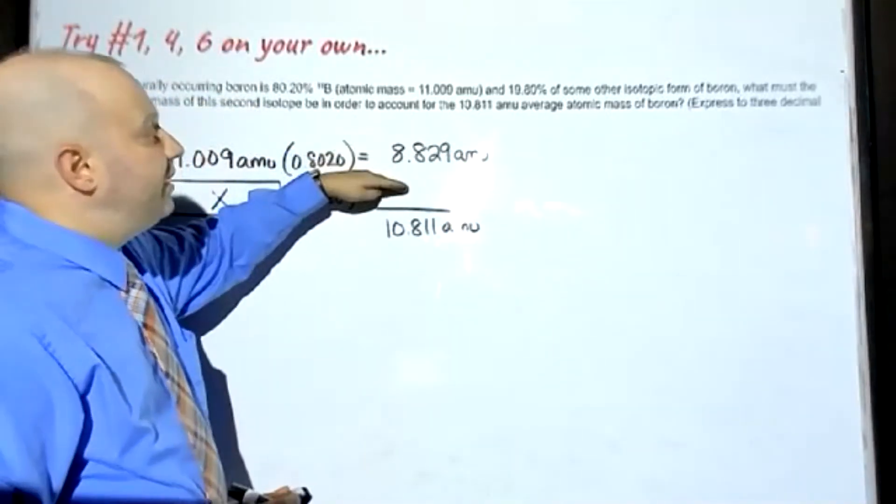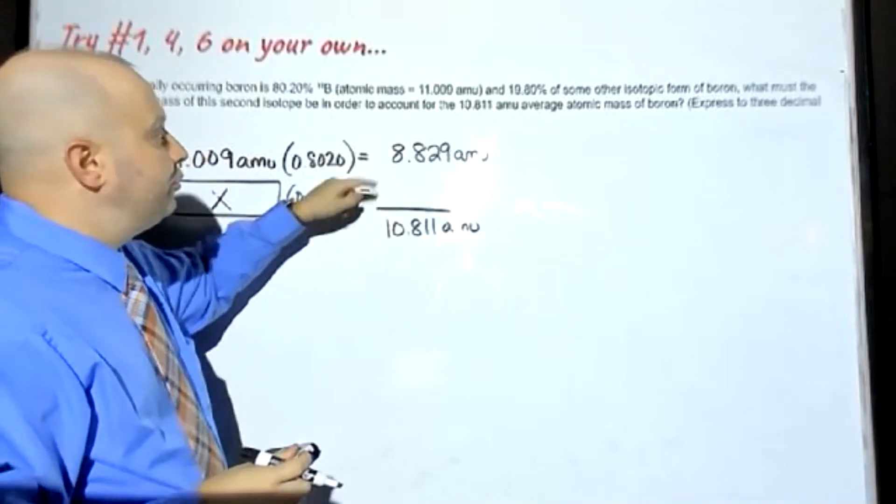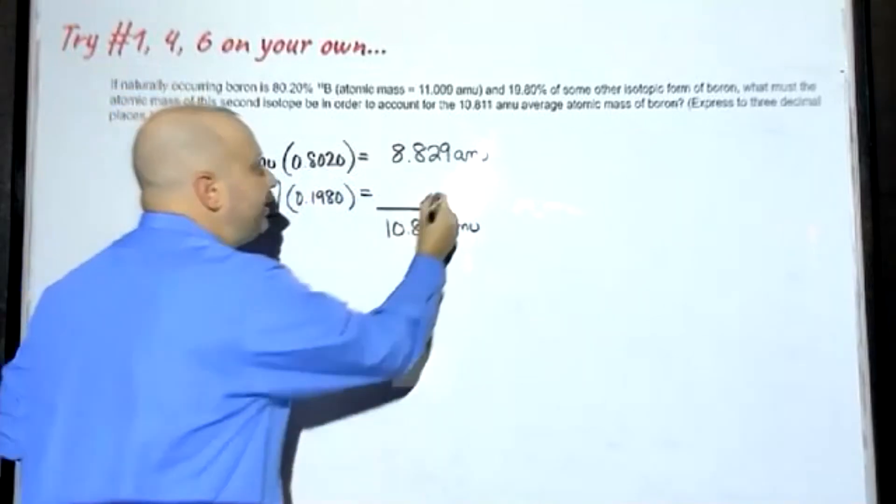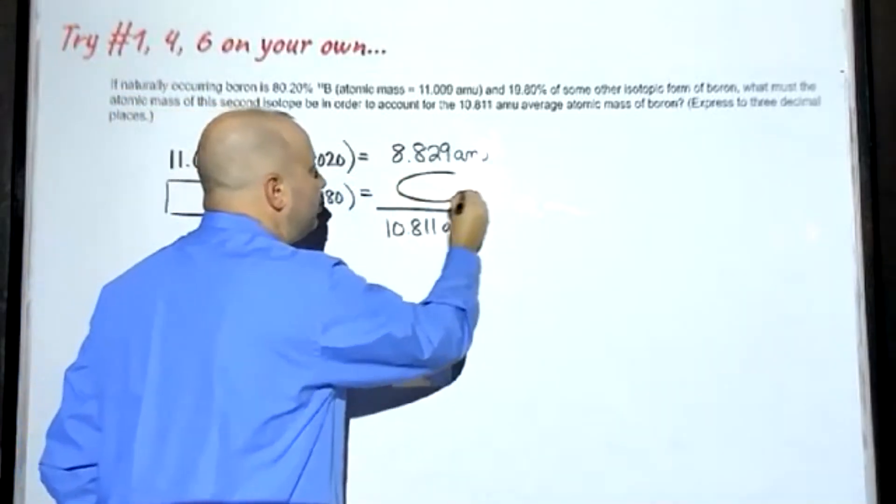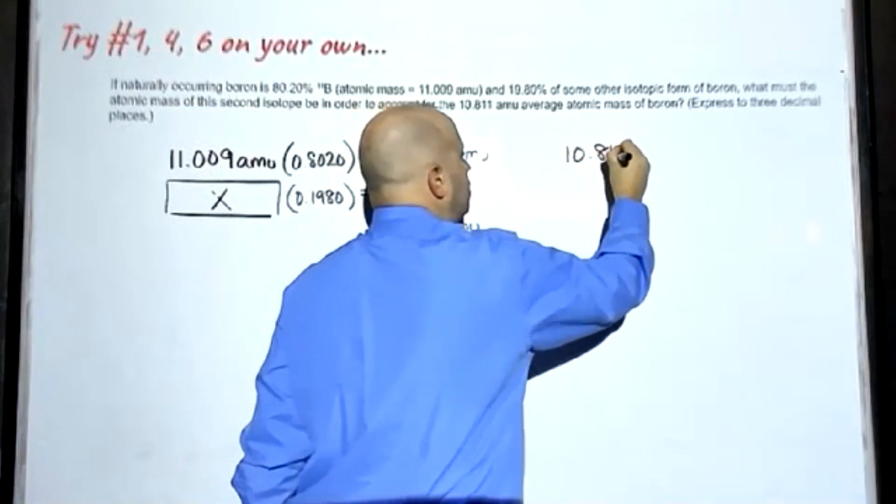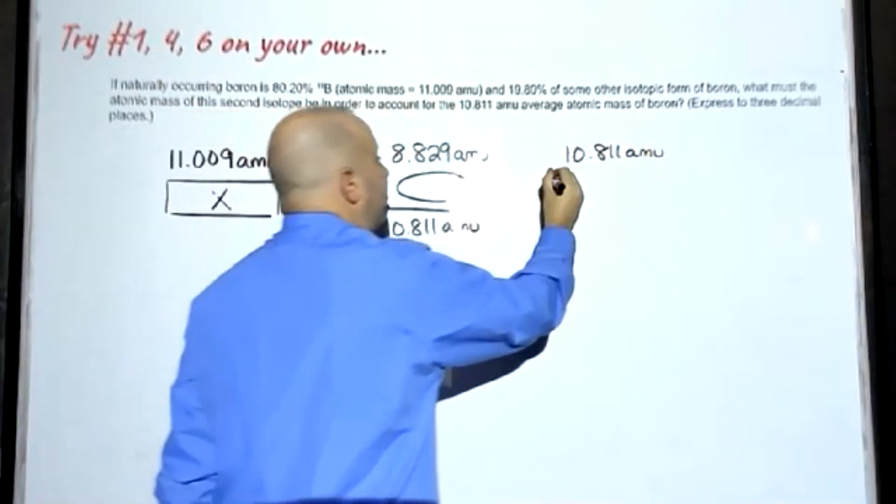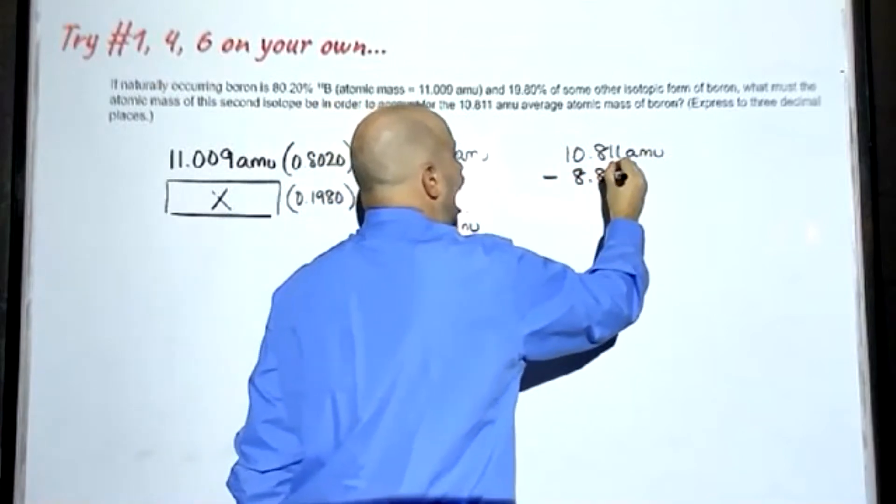If we had both, they would add up to be 10.811. So in order to figure out this piece, the piece that's missing here, we can take the 10.811 and we can subtract out the part that we know, 8.829.